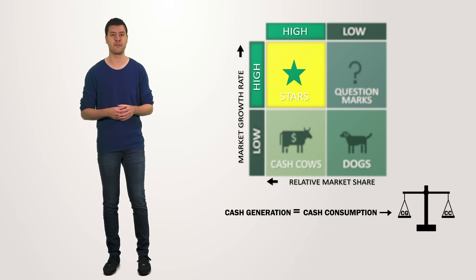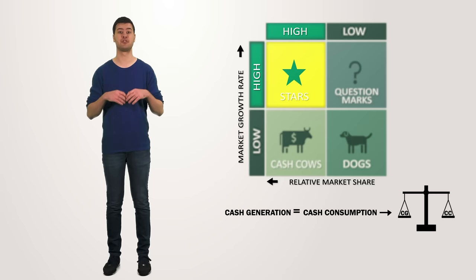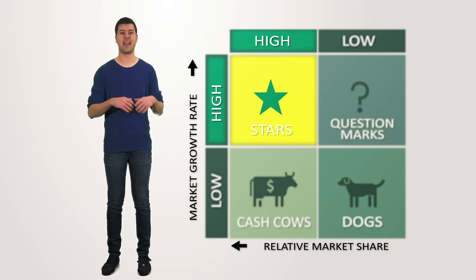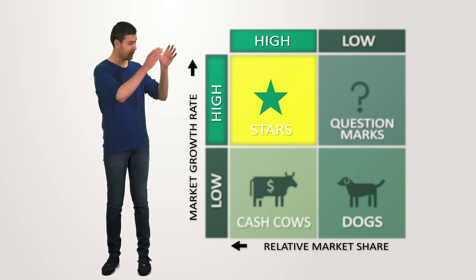Successfully diversified companies should always have some stars in their portfolio in order to ensure future cash flows in the long term. Apart from the assurance that stars give for the future, they are also very good to have for your corporate image. After all, who doesn't want a flagship product in their product portfolio? Eventually after years of operating in the industry, market growth might decline and revenues stagnate. At this stage your stars are likely to transform into cash cows.